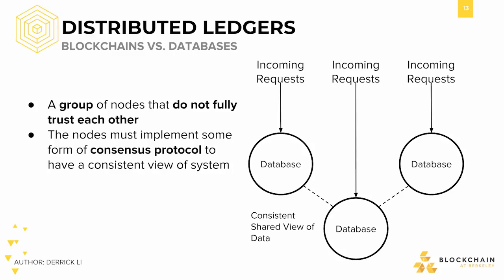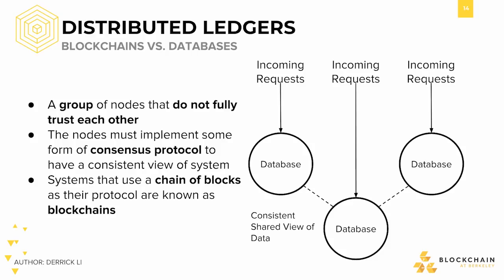While many consensus mechanisms exist for distributed ledgers, those that specifically implement a chain of blocks in their record keeping and consensus protocols are known as blockchains. Recall that the fundamental innovation of blockchain was not to enable distributed information sharing — many forms of distributed databases exist that allow for this without a blockchain. Instead, blockchain's uniqueness lies in its distributed record keeping and decentralized exchange of value. Compared to a traditional database, a blockchain system is uniquely able to remove the need for centralized administrators and allow for non-trusting parties in the network to interact with each other.